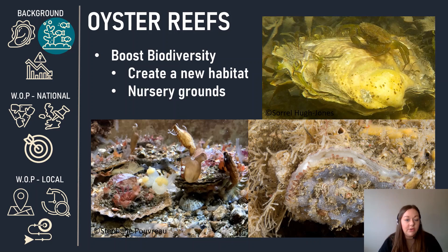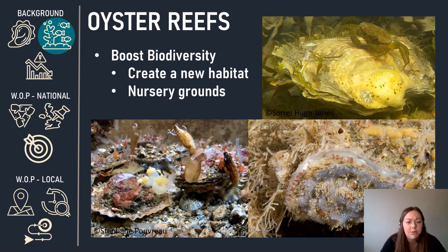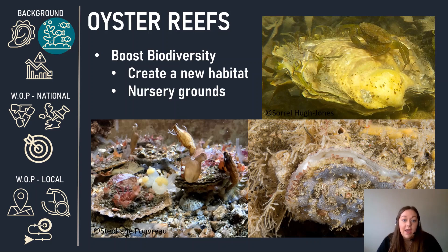The boost to local biodiversity that oyster reefs provide is enormous, and there are two major mechanisms for this. First, the oyster shells themselves provide the hard substrate that attracts epifauna — living things living on another living thing — so things like sponges, bryozoans, macroalgae, sea squirts, basically those encrusting and sessile species. You can see this really nicely in these images, especially the bottom two here. In the bottom right you can barely see the oyster unless you're really looking for it, it's so heavily encrusted. The second mechanism is the 3D habitat that the reefs create. The gaps and crevices in between the oysters create another micro-habitat providing shelter, and these spaces are great for smaller mobile species like crabs and small fish. Because of this, oyster reefs can act as nursery grounds for juvenile fish, including commercially important species.